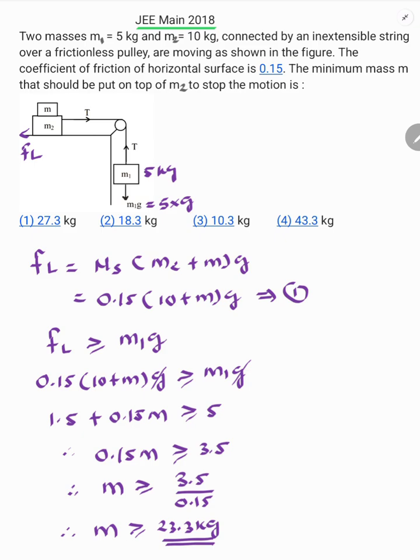So what is the minimum value of M in the given options? That is 27.3 kg, because 27.3 kg is greater than 23.3 kg. So the minimum value of small m is 27.3 kg. The correct option is option 1. Thank you.